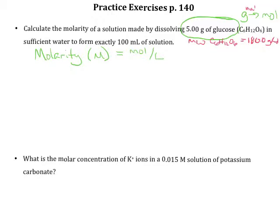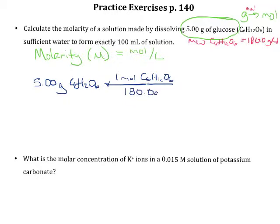Now we're ready to perform our calculations. We're going to start with our 5.00 grams of glucose. We are going to convert those grams into moles because we know that every mole of glucose weighs 180 grams. And that's going to tell us that we have 0.0278 moles of glucose.